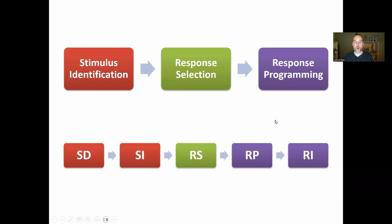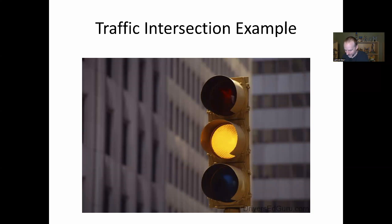So we've got our three-stage model of information processing and then a more detailed five sub-stage model, and we're going to need this for Donders' subtraction method, which we'll discuss now. We'll also go through a traffic intersection example first.